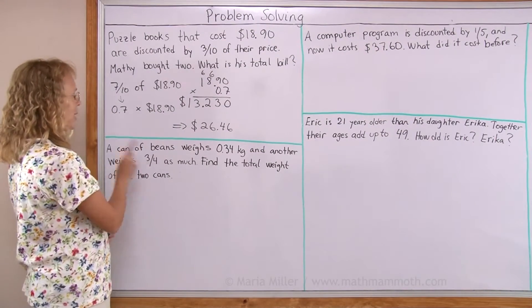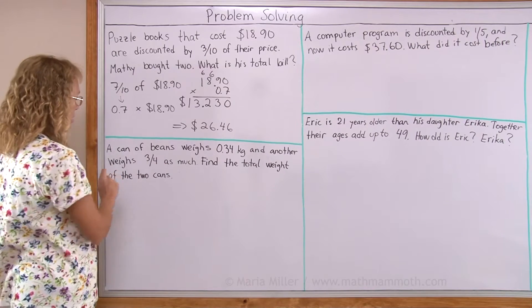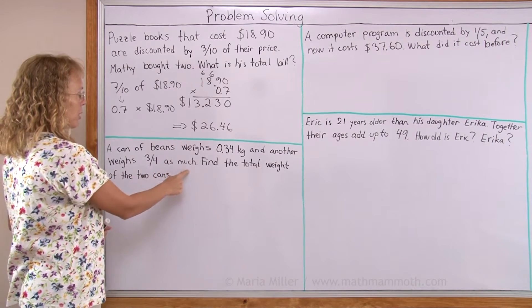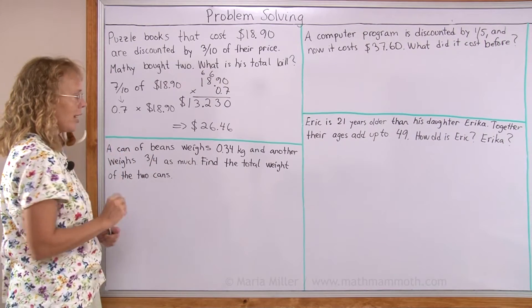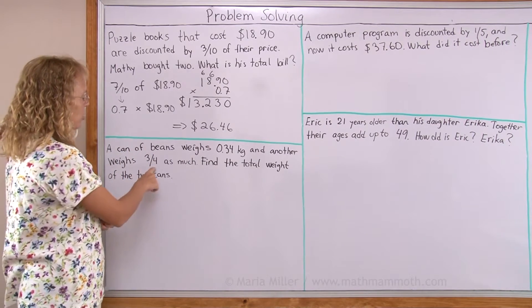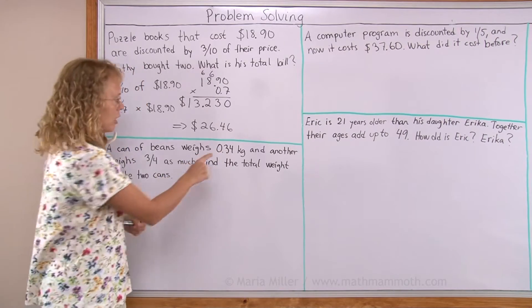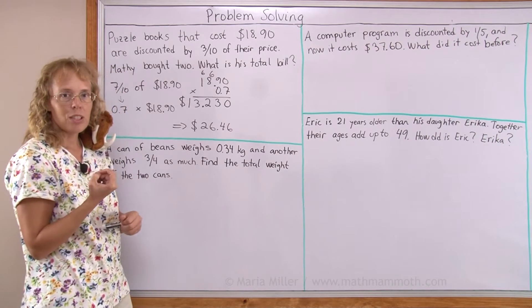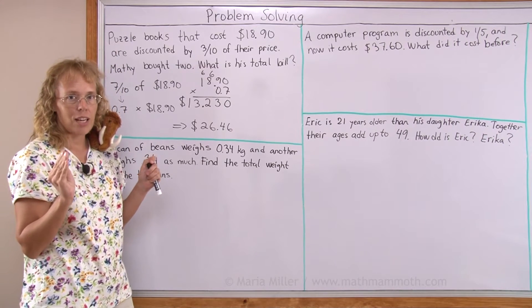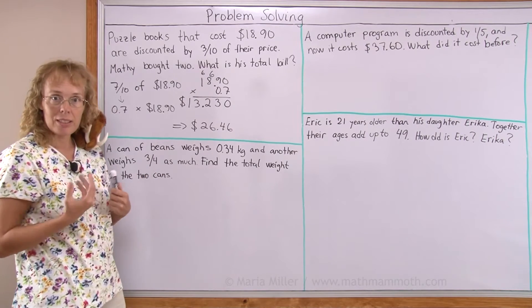A can of beans weighs 0.34 kilograms and another weighs three-fourths as much. Find the total weight of the two cans. Now there's a fraction here and a decimal here but we could, if we wanted, we could change this into grams. You see a kilogram is 1,000 grams. So we could change it to grams and then maybe it will be easier to handle.